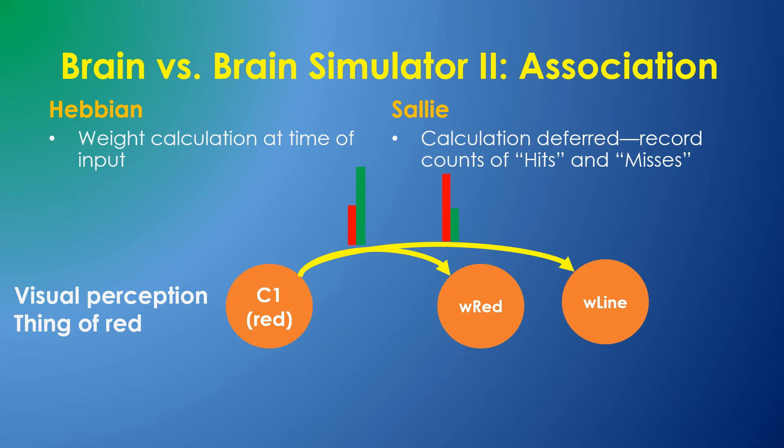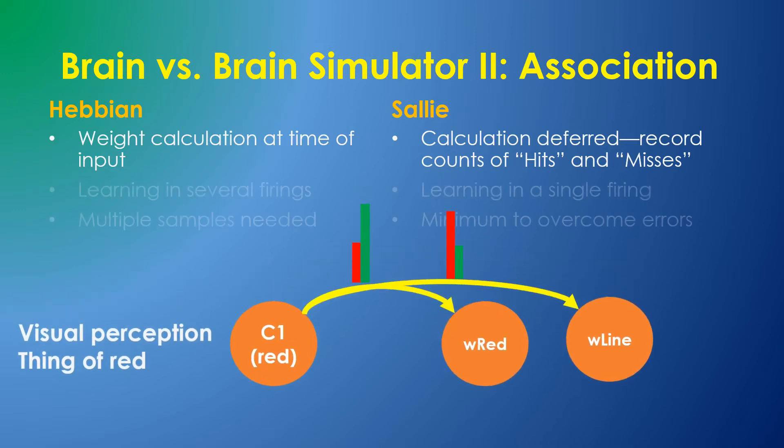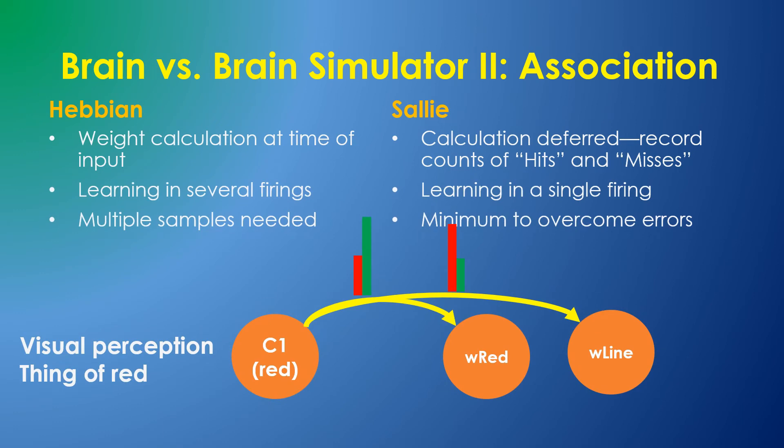There are several advantages to recording the raw hits and misses. The first is that Sally can learn with as little as a single sample if it is correct and unambiguous. She can learn with a minimum number of samples as long as the hit-miss counts are sufficient to overcome any errors and ambiguities.